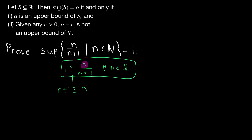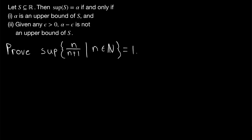This gives us the desired inequality that 1 is indeed greater than or equal to n over n plus 1 for every natural number n, showing that 1 is indeed an upper bound of the set. All that remains is to show that for any positive number epsilon, 1 minus epsilon is not an upper bound of the set, so 1 is the least upper bound. We can't reduce it by anything and still have an upper bound.